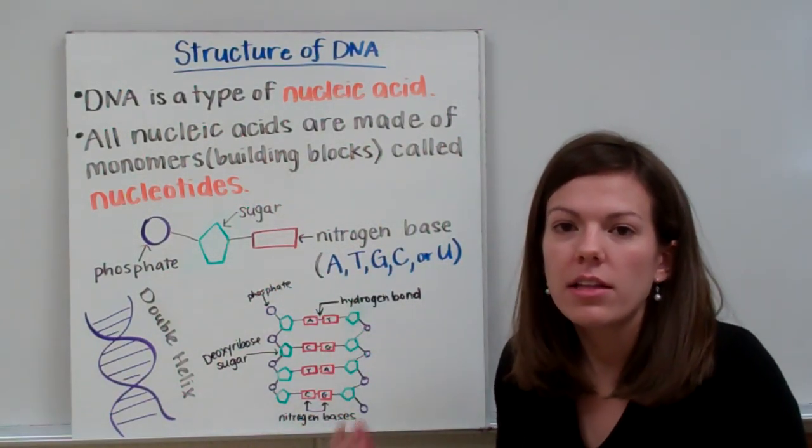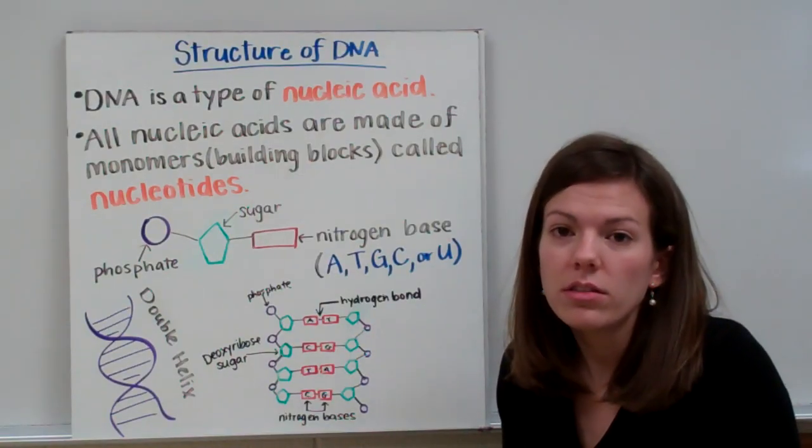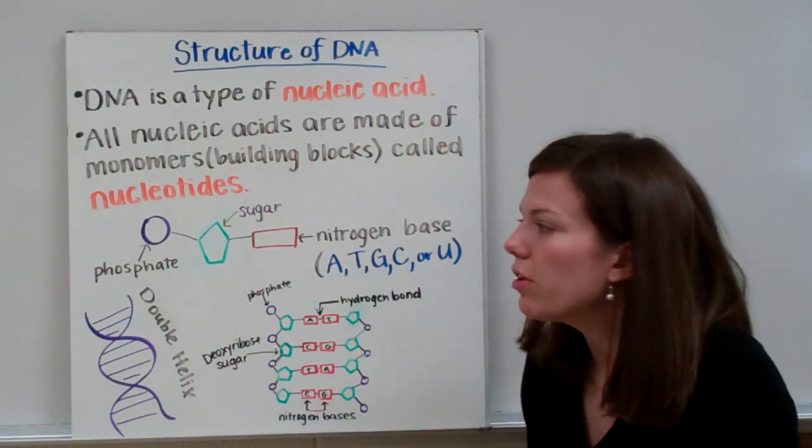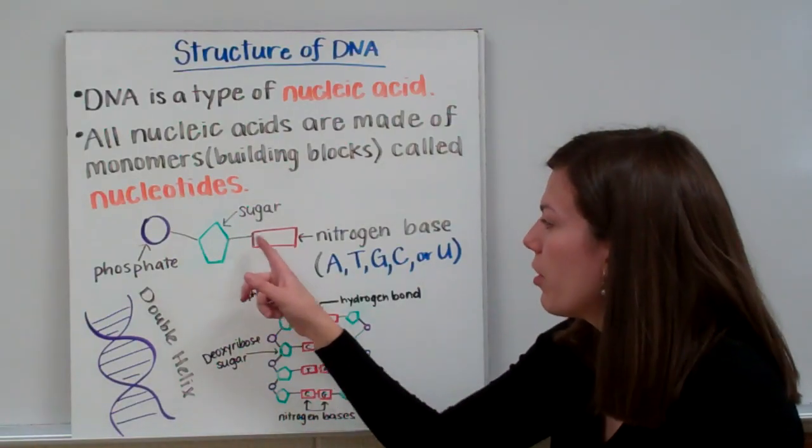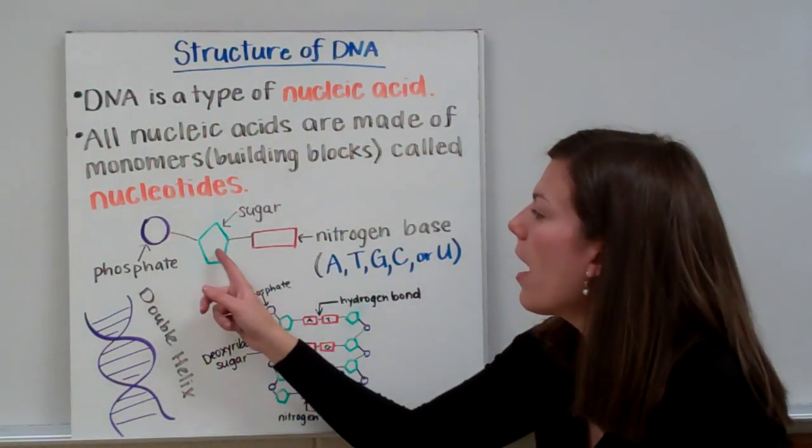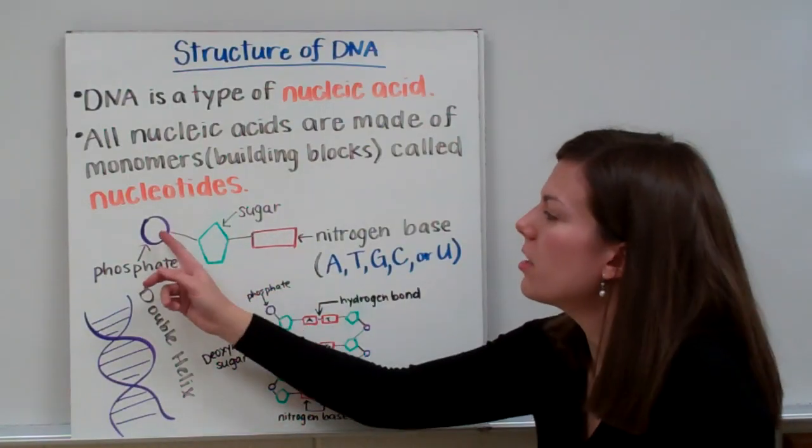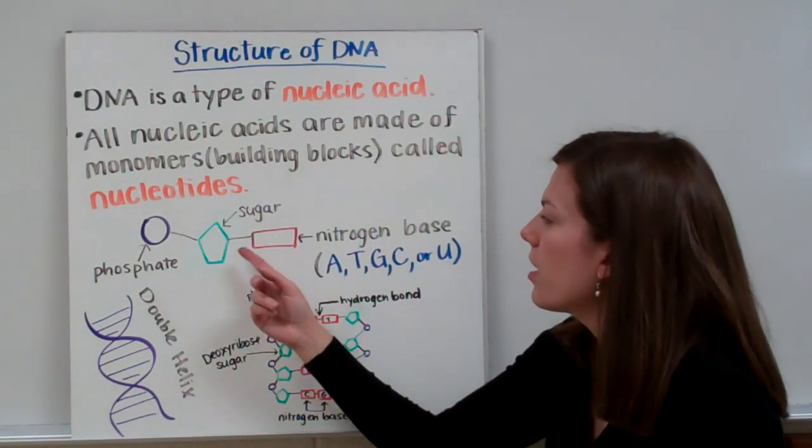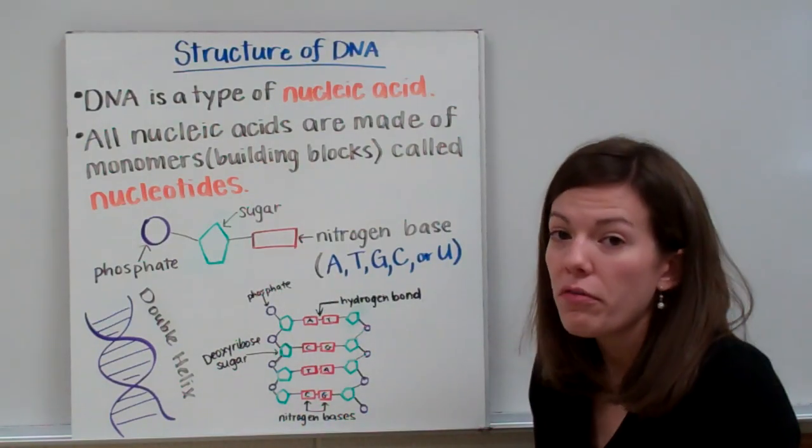When you're looking at DNA, it's made of repeating units called nucleotides. This purple, green, and red structure is a nucleotide. In class we call this a pool, house, driveway because the circle looks like a pool, the sugar looks like a house, and the nitrogen base looks like a driveway.